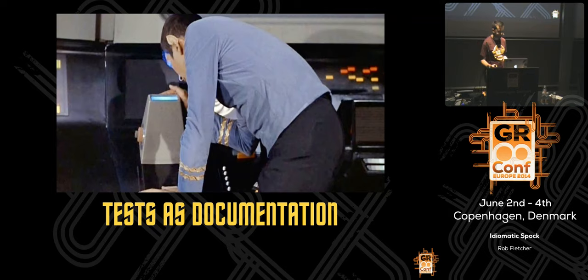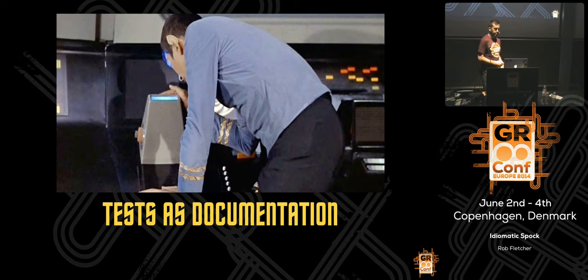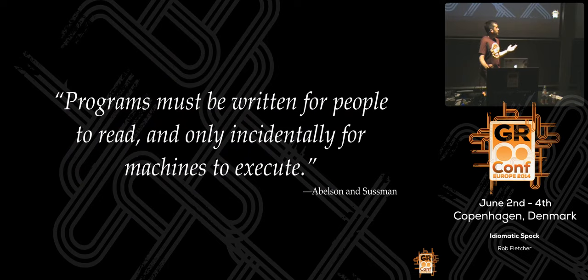Tests are executable documentation. They can't go stale the way a Word document or wiki can — I've worked on teams where someone was tasked with maintaining a horrendous document that was never correct or up to date. Tests don't have that problem as long as you maintain them. This means naming things and structuring tests is really important because they are the documentation for your system. Programs must be written for people to read and only incidentally for machines to execute — and this goes double for tests.